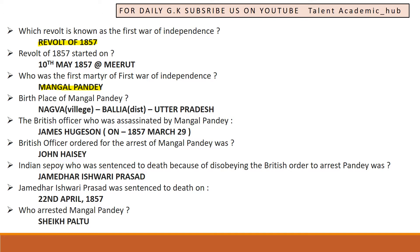The British officer who was assassinated by Mangal Pandey was James Hudson. He was assassinated on 29th March 1857. The British officer who ordered the arrest of Mangal Pandey was John Heisey.